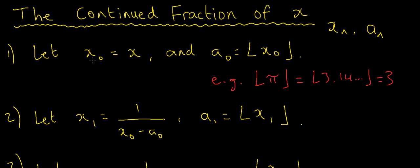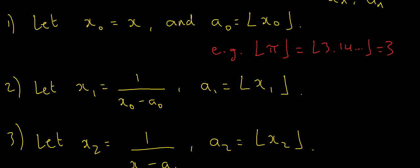First, we let the first term of the x_n's, x₀, be equal to x — so for instance x would be root 2. We're going to set a₀ to be the floor of x₀. If you've forgotten what the floor means, the floor is just the largest integer which is smaller than the number inside these braces. For instance, the floor of pi is 3 because the largest integer which is smaller than pi is 3.